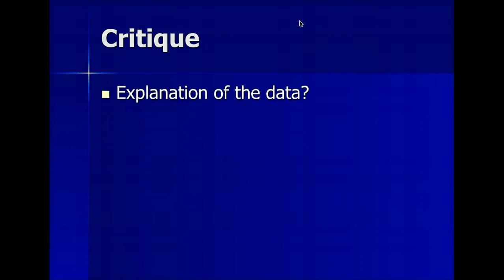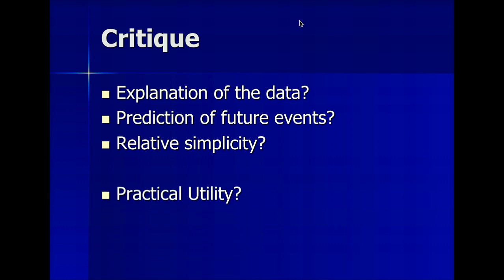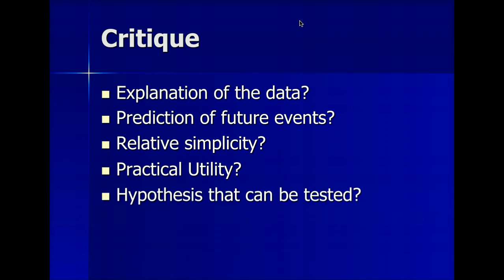Our critique: it's an objective theory. Does it give us a good explanation of the data? It's prescriptive instead of descriptive, so it's hard to say that it does, but it does yield experimental results — experiments demonstrate that groups that follow these functions will make better decisions. Does it help us predict future events? Very good on that — it says if a group follows these processes, it will lead to better decisions. Relative simplicity: you boil down group communication to four logical steps, and it doesn't get much easier than that. Practical utility: this is probably one of the theories with the highest practical utility because of that prescriptive nature. And finally, it has a clear hypothesis that can be tested — follow these four steps and you will reach better decision making.